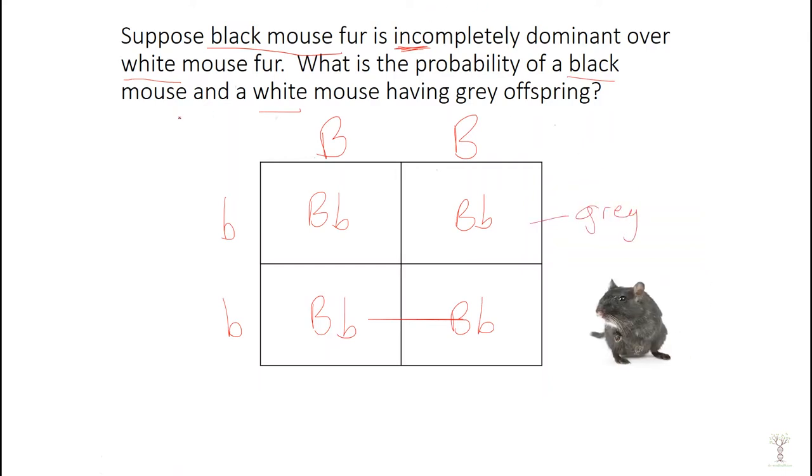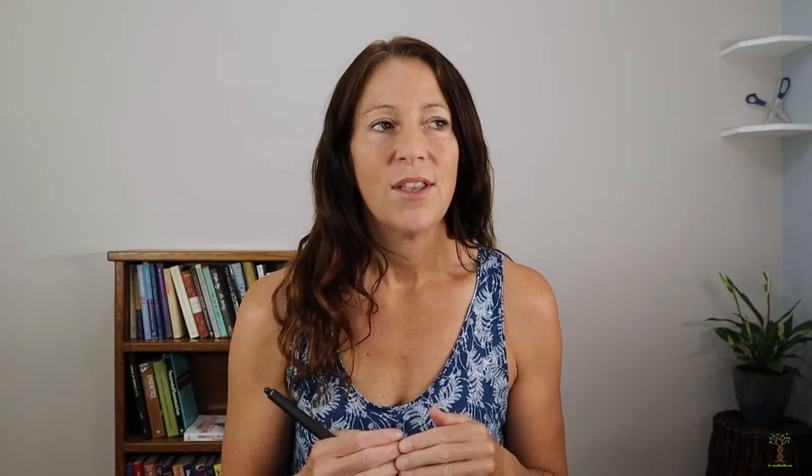So what is the probability of a black and white mouse having gray offspring? In this example, 100%. There are roan horses. When you look at them from a distance they look like they are gray, but if you get up very close you can see that they have black hair and white hair. This is an example of co-dominance when you express both alleles. So in complete dominance you always show the dominant phenotype unless you have both recessive alleles; in incomplete dominance you have an intermediate. But if it's co-dominant then you're going to express both the black allele and the white allele.